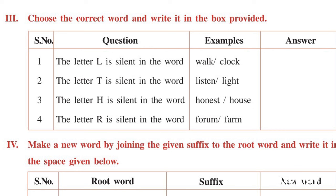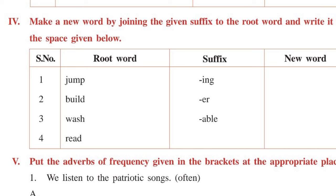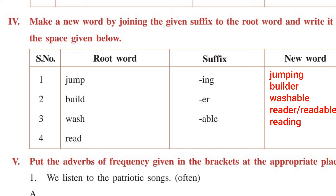Let's move on to the third roman. L is silent in 'work'. T is silent in 'listen'. H is silent in 'honest'. R is silent in 'firm'. Carefully understand where which letter is silent and write it down correctly. Next is the fourth roman. Here we have given one root word and suffix. We have to combine and write it down: Jump + ing = Jumping. Build + er = Builder. Wash + able = Washable. Read + er = Reader. Read + able = Readable. Read + ing = Reading. For 'read' we have written three suffixes.